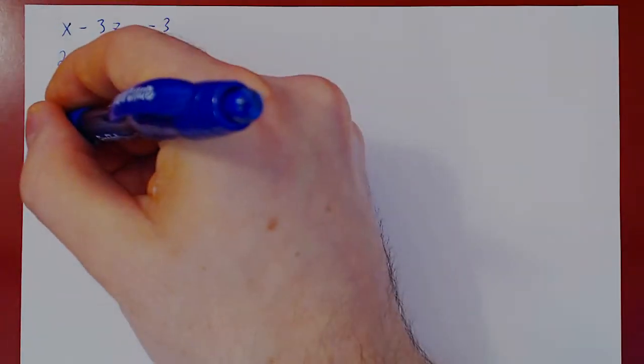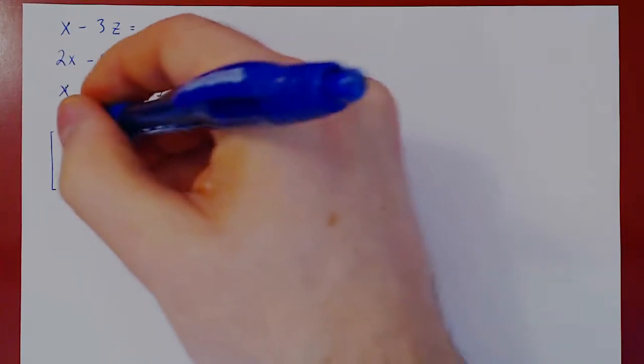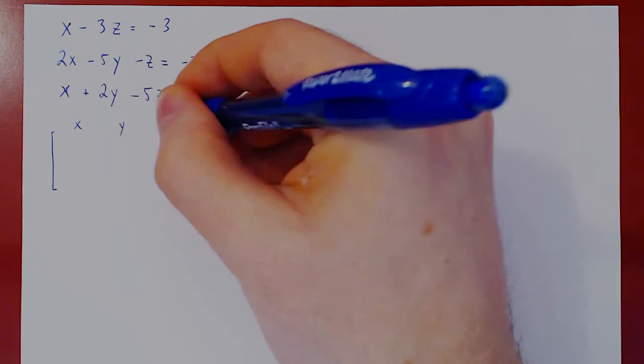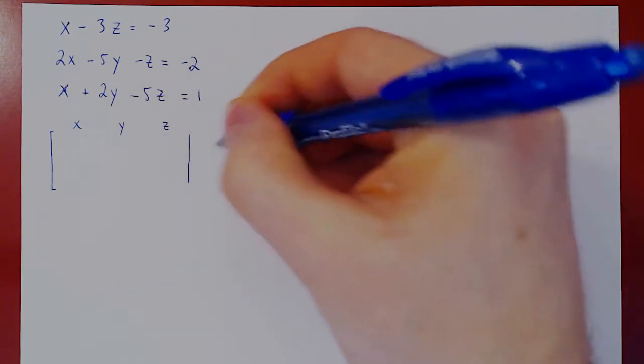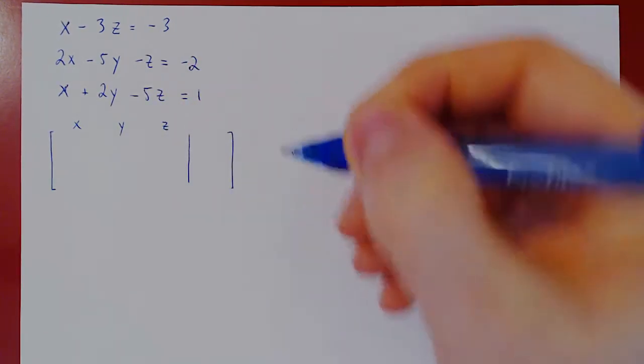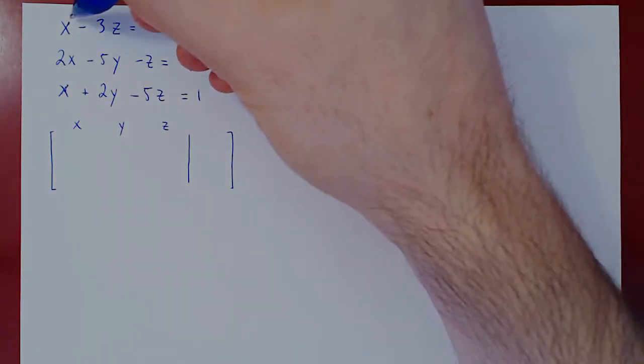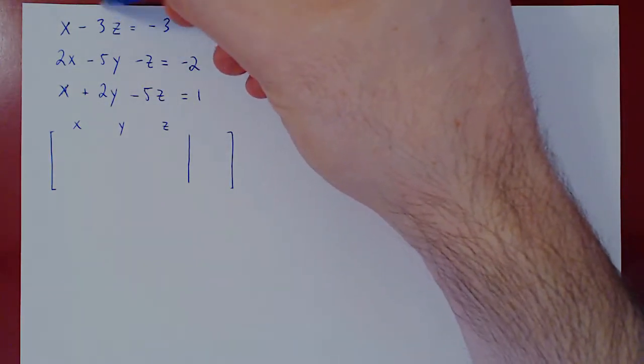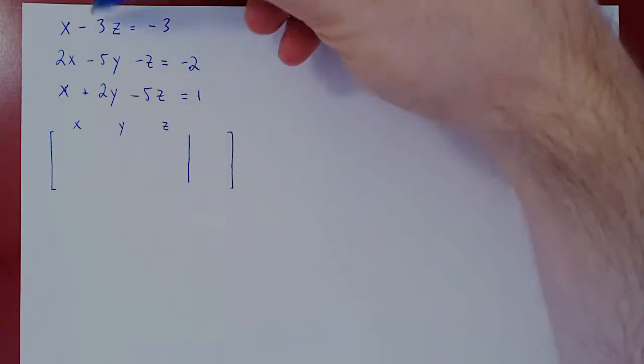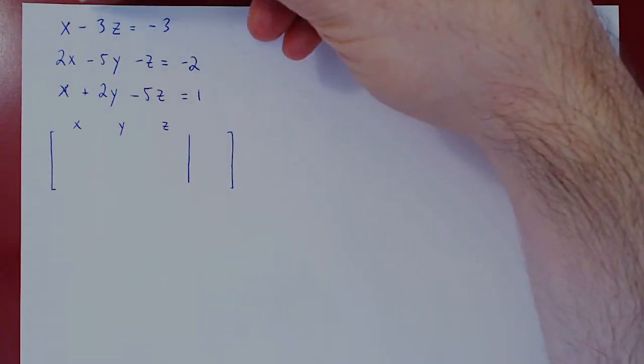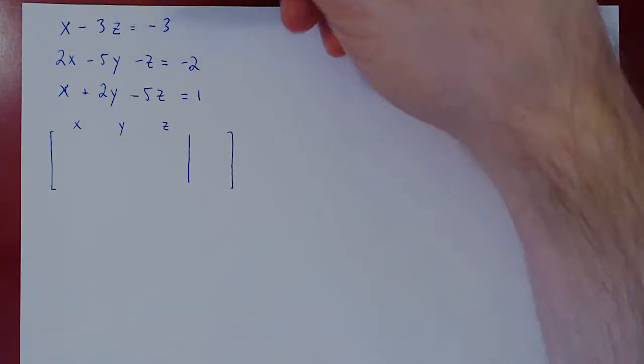As always, the first step is to construct the augmented matrix of the linear system. The first row, be careful, since there is no y, then its coefficient is 0. Think of this as being x plus 0 times y minus 3 times z.